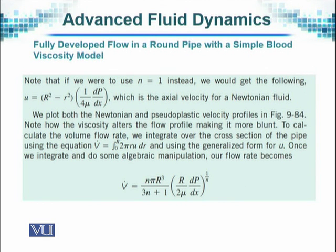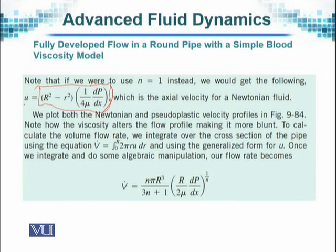If we use N equal to 1, we get that U is equal to this value and it turns out to be second order — a parabolic velocity profile in the axial direction, since the velocity component U is taken to be the axial velocity. The pressure gradient plays an important role in this solution.